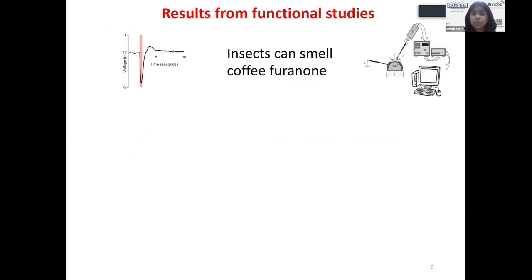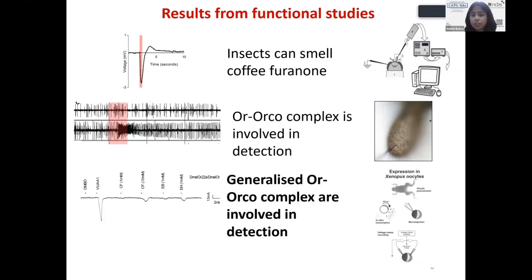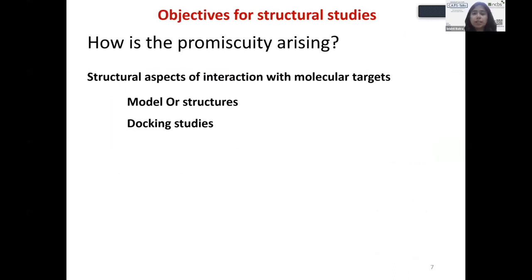This happened in multiple insect species. I then dug deeper into single sensillum recordings from olfactory receptors in Drosophila, which led me to OrX and Orco complexes involved in detection. I then took it to an in vivo system, expressing olfactory receptors in Xenopus oocytes as well as in cell lines. We noticed that generalized Orco complexes were getting activated by coffee furinone. This brought me to an interesting structural aspect: since they work with combinatorial coding, how is a ligand activating multiple kinds of receptors?